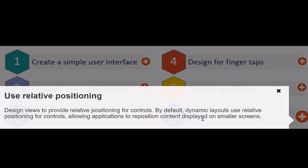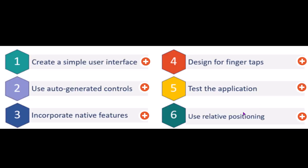If you add your controls in a dynamic layout, the advantage is that the dynamic layout uses relative positioning in the back end — it will rearrange the controls so that there is no horizontal scrolling in the mobile.